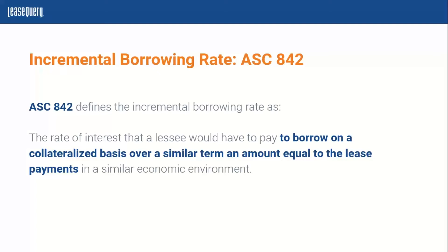ASC 842 defines the incremental borrowing rate as the rate of interest that a lessee would have to pay to borrow on a collateralized basis over a similar term, an amount equal to the lease payment in a similar economic environment. Now, if you're familiar with the 840 definition, there are some slight differences. 840 defines it as the rate a lessee would have incurred to borrow instead — a slight difference in wording — but entities before would just go to their treasury, whereas now they will have to put more emphasis on identifying and applying the appropriate discount rate to each lease.